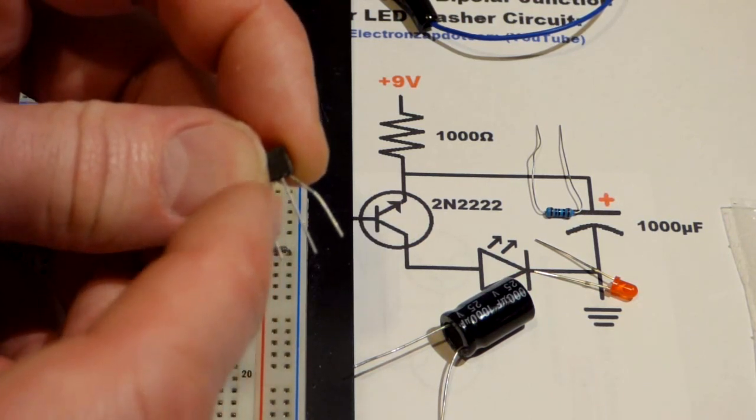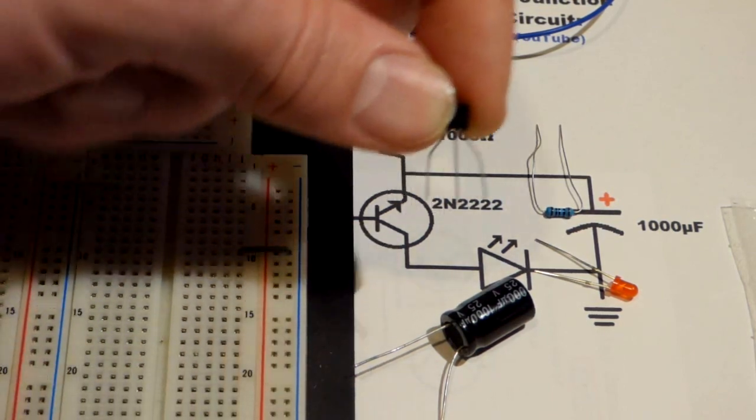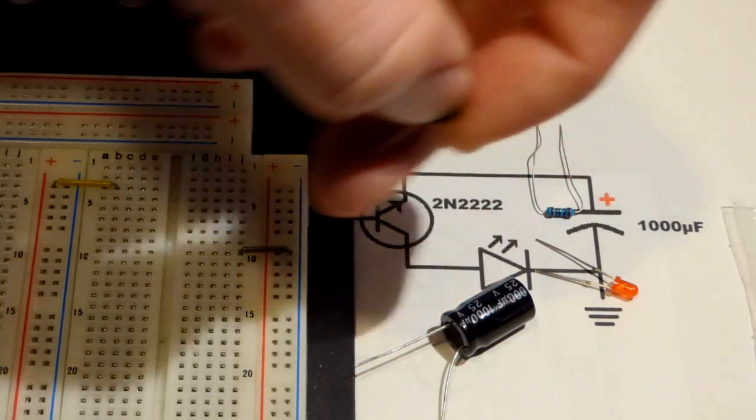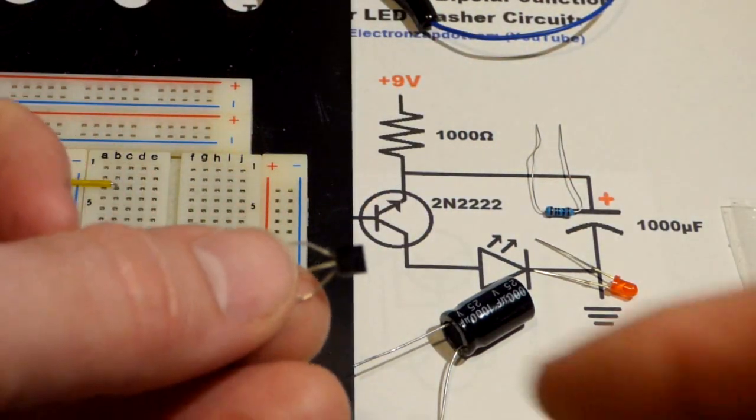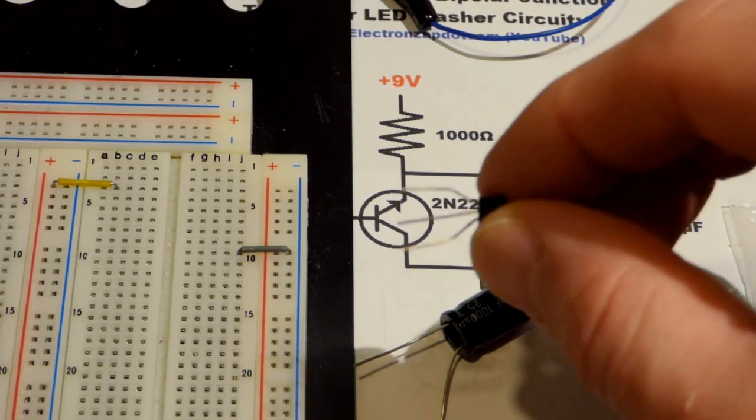Flat side facing us, we got the emitter here, base in the middle, collector on the right. As far as the schematic is concerned, if we turn it this way, now we have the pin layout that we want. So the emitter on top, base in the middle, collector at the bottom.